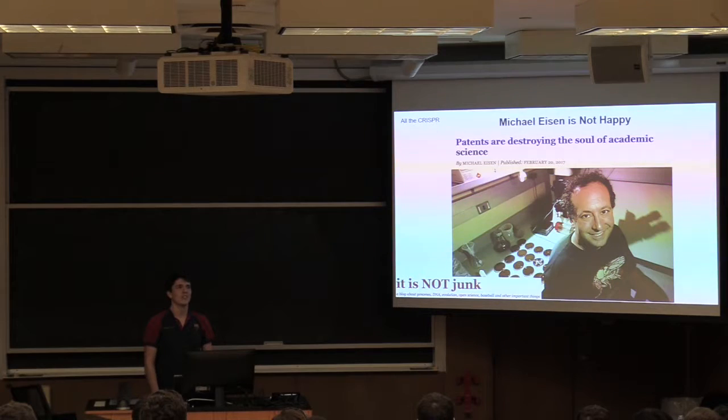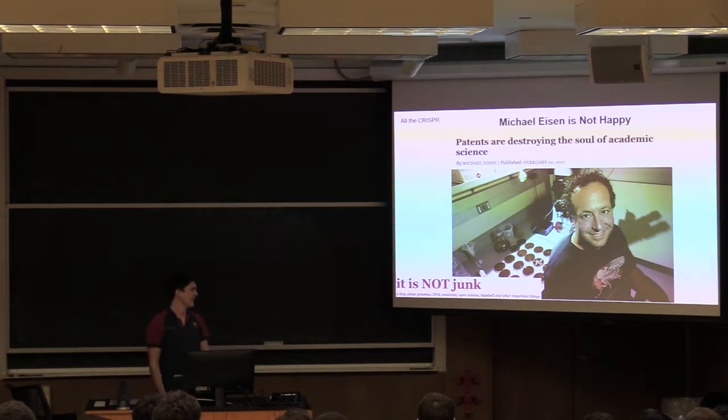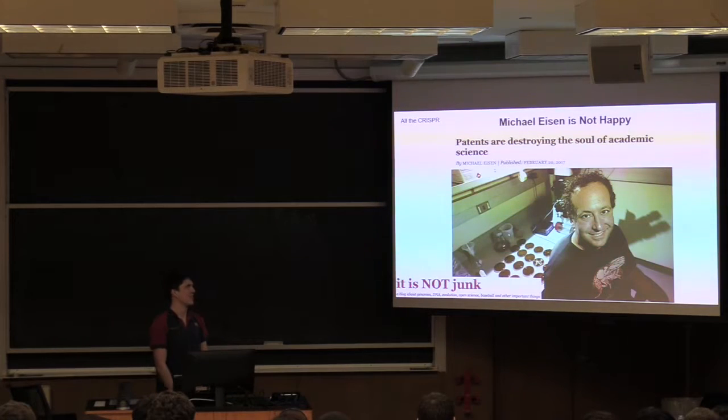Basically arguing that the patent court's decision was primarily based on Jennifer Doudna being a good and cautious scientist and not overstating the research that she had done. And that basically the Broad won by overstating their results and playing the patent game. The result of all this is everyone's going to hide their research until they publish it, until they patent it. And the free exchange of ideas is going to decrease because of all this patent stuff.